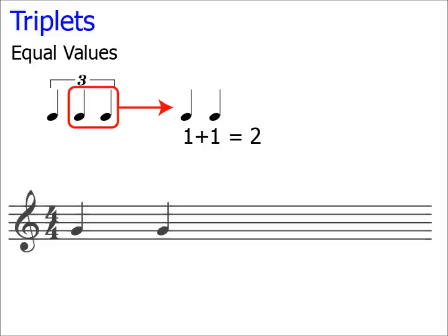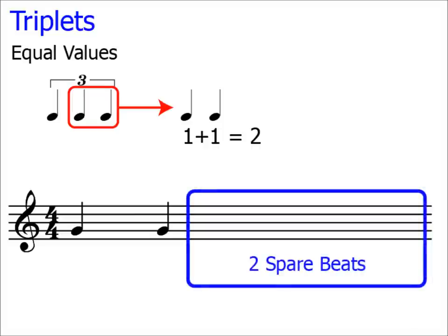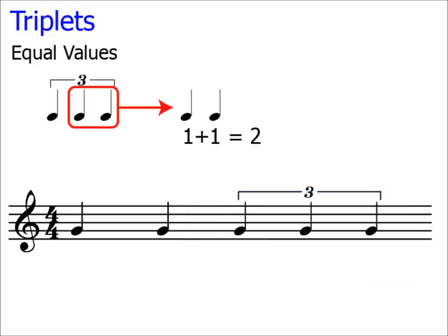Here's a bar of 4-4 to explain this a little clearer. And as you can see, I've put 2 crotchets on beats 1 and 2. This means that we have 2 spare beats in the rest of the bar. Now, there's a whole range of rhythms that we could pop into these 2 beats. 2 crotchets, 4 quavers, 1 crotchet and 2 quavers. The list goes on. By using triplet crotchets, which we've just worked out to have the value of 2, we can squeeze in 3 crotchets into the time of 2.